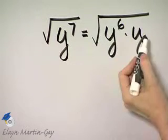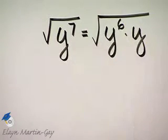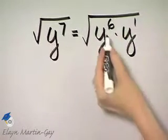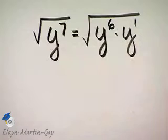Now do you agree that y to the 6th times y is y to the 7th? Think of this as y to the power of 1, and here you would add exponents.